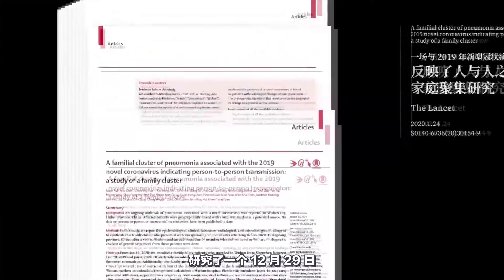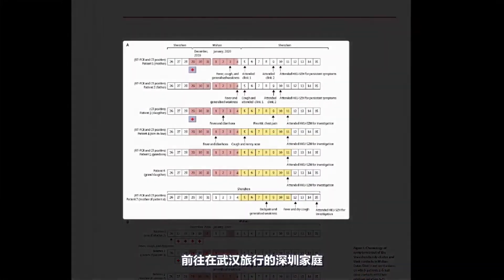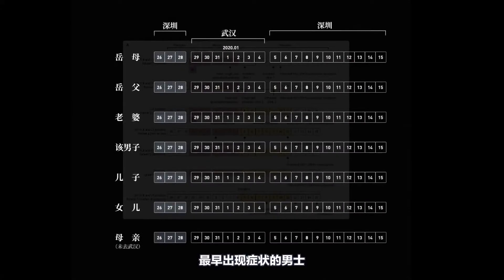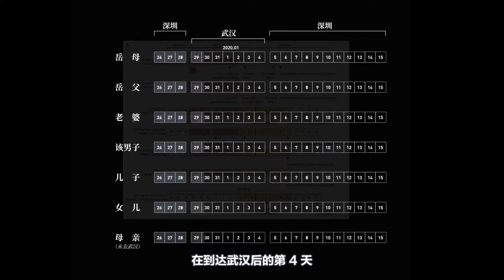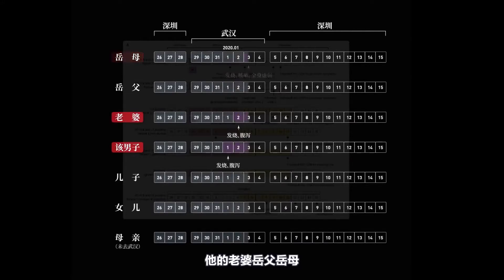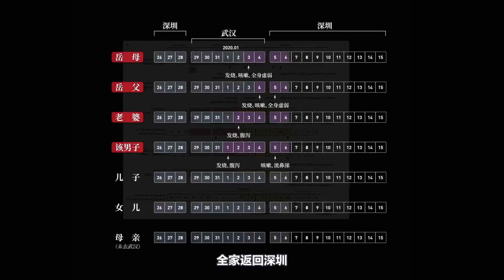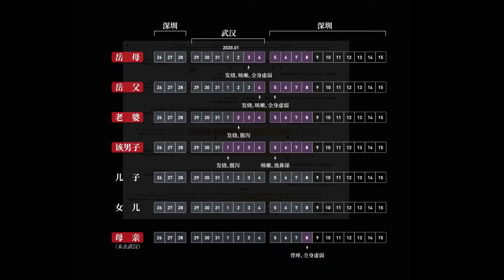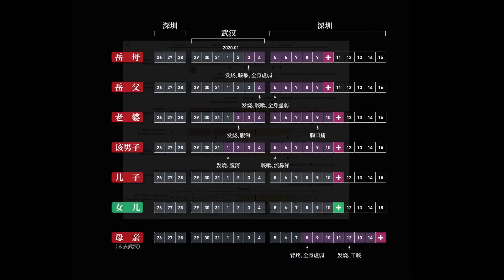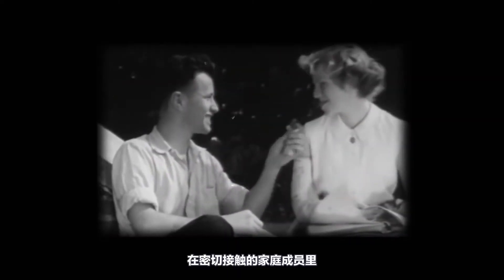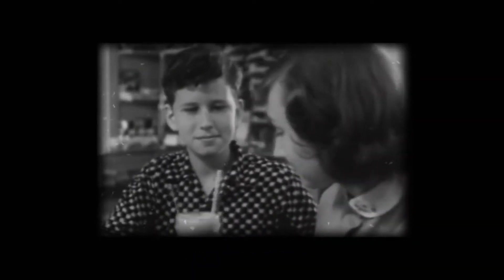On January 24th, another paper studied a family from Shenzhen who traveled to Wuhan on December 29. The male patient with the earliest symptoms onset started to have a fever and diarrhea four days after arriving. Three days later, his wife and parents-in-law all developed fevers and started coughing. On January 5th, the whole family returned to Shenzhen. His mother, who had not been in Wuhan, felt lethargic. Eventually, six out of seven family members were positively diagnosed with novel coronavirus pneumonia, including the son with no visible symptoms.